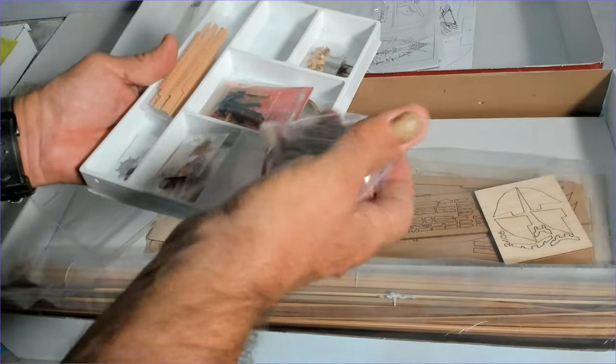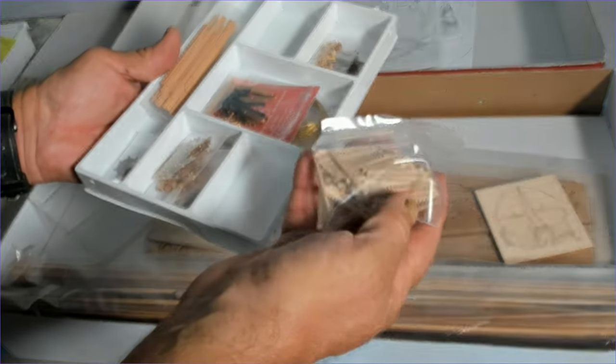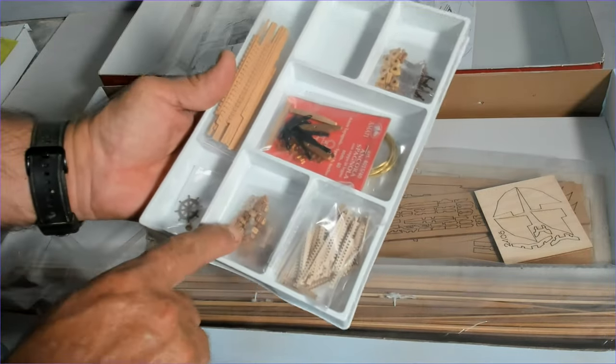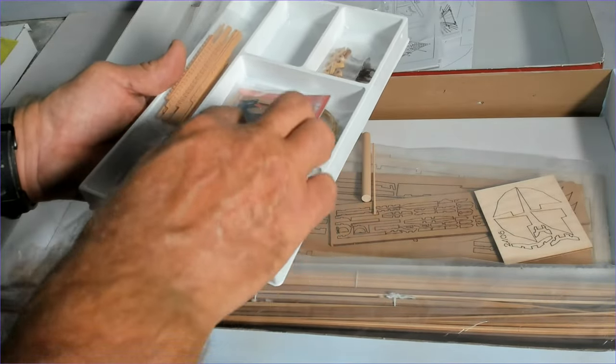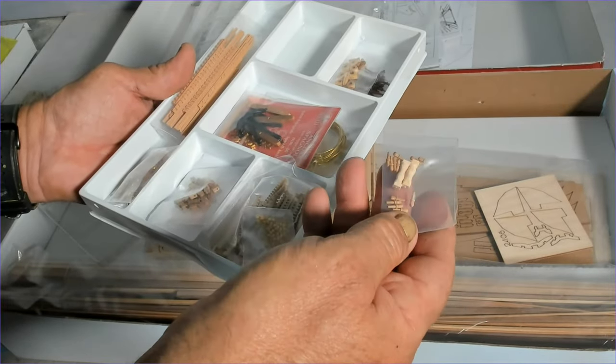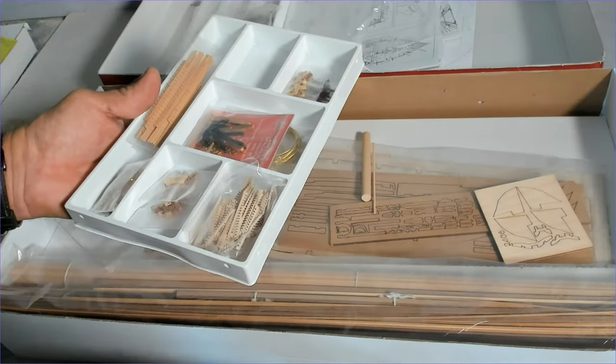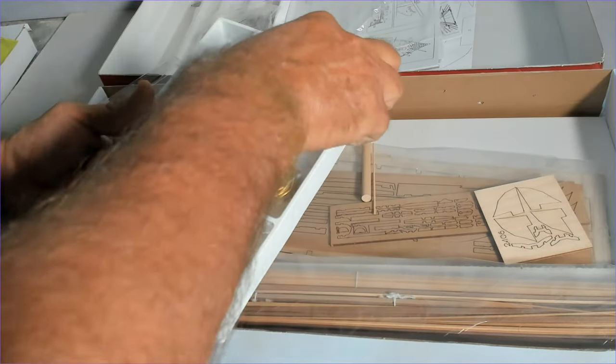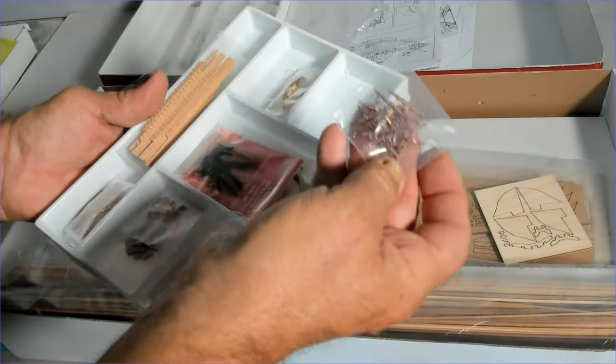We have parts for the gratings. Again they look of really good quality. We've got brass nails, more blocks, got some belaying pins in there, they would look nice. Some tiny little bearings, more pieces. So quite miniature.